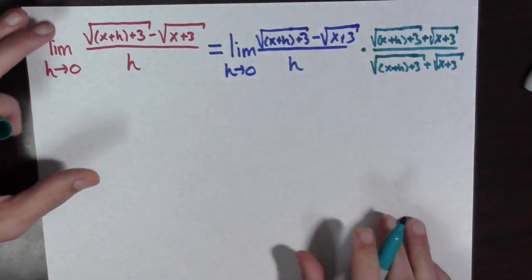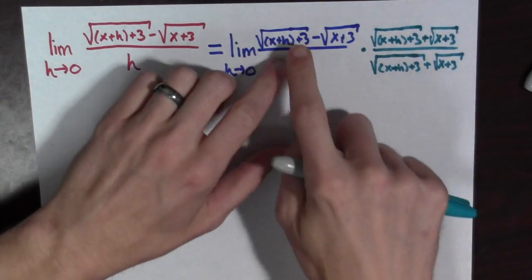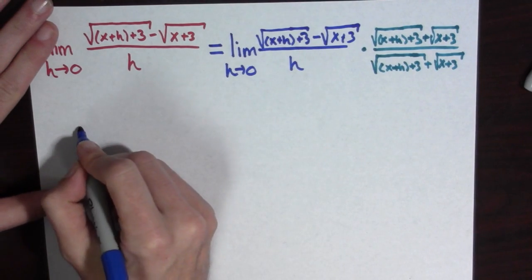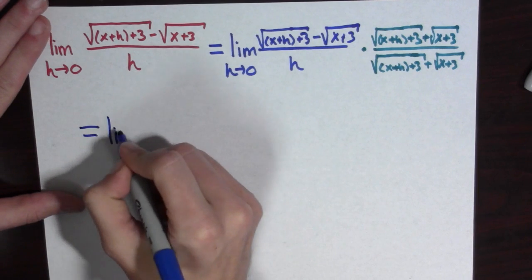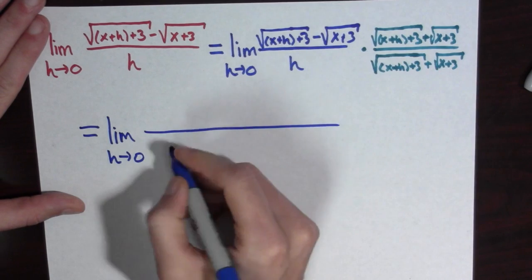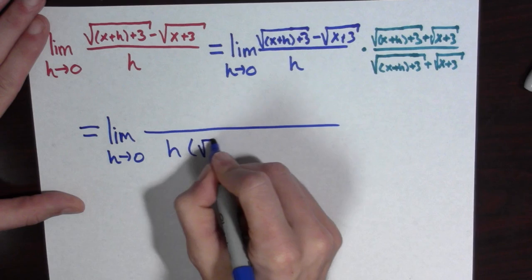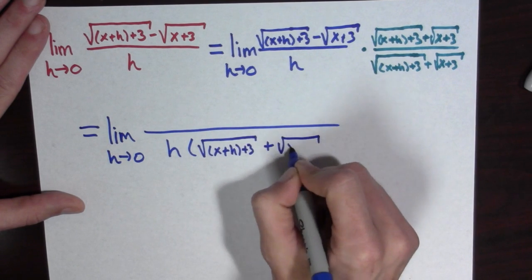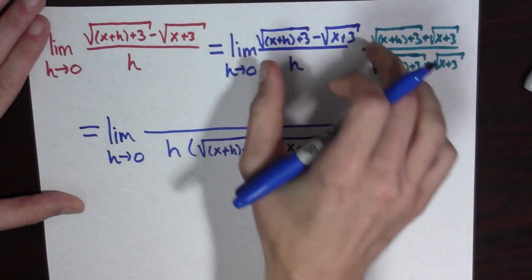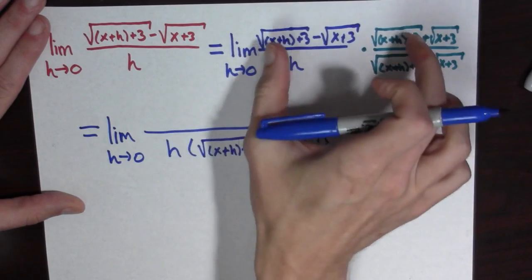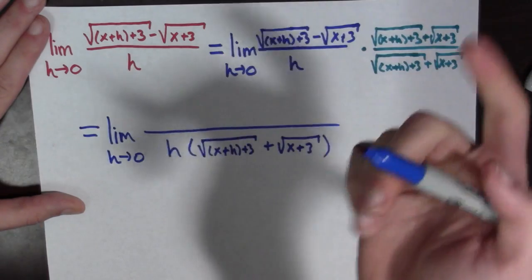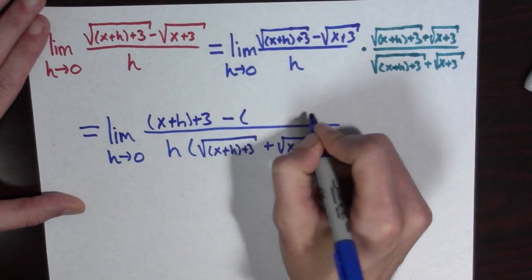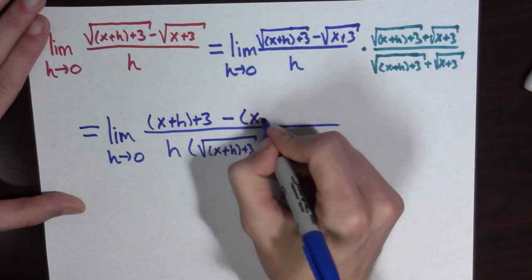Now we have to simplify this. This is really the same way the difference of two squares factors. We'll start with the denominator: h times the square root of x plus h plus 3, plus the square root of x plus 3. For the numerator, this is how the difference of two squares factors — the first term is x plus h plus 3, and then minus the square of this term, which is x plus 3.